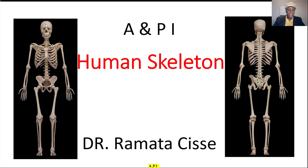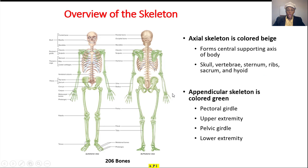On your left, you see the anterior view of the skeleton. On the right, you see the posterior view of it. The human skeletal system is divided into two parts: the axial and the appendicular skeleton. The axial here is in beige in the middle, made of the skull, vertebrae, sternum, ribs, sacrum, and hyoid.